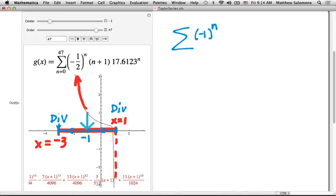The series general term was negative 1 to the n times n plus 1 over 2 to the n times x plus 1 to the nth power. Sum n equals 0 to infinity. So when I plug negative 3 in here for x, this factor, negative 3 plus 1, becomes negative 2 to the power n.